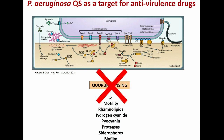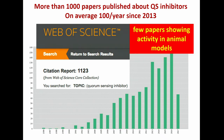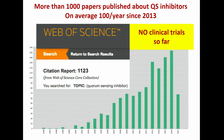If we inactivate quorum sensing, the expression of all these virulence factors will be shut down. And indeed, there are many papers published every year about quorum sensing inhibition — on average, 100 papers per year in the last four years, using the query 'quorum sensing inhibitor.' More or less half of these papers are about the inhibition of Pseudomonas aeruginosa quorum sensing. However, very few papers show activity in animal models, and as far as I know, there are no clinical trials so far.